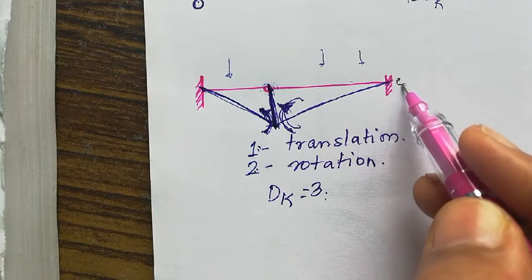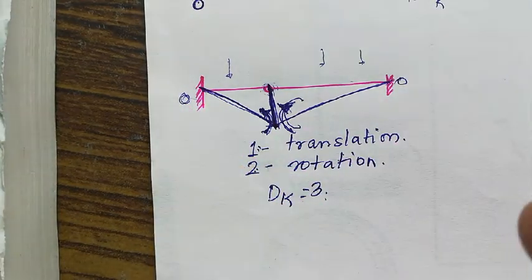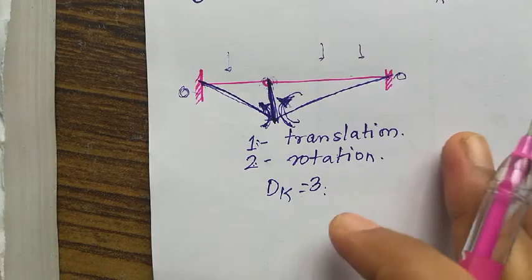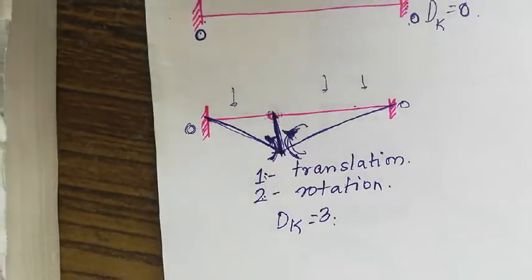So the total degree of freedom is two rotations plus one translation, which equals three. The beam both deflects and rotates. At the fixed end, you have zero degrees of freedom.